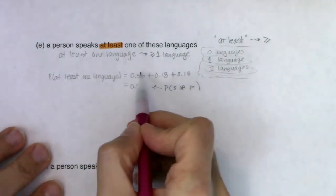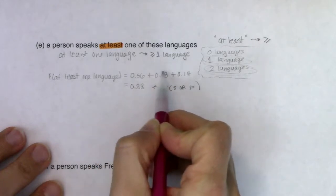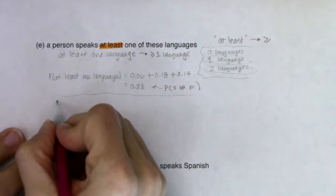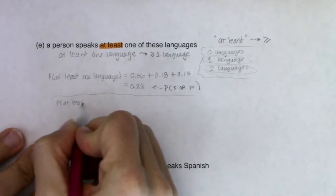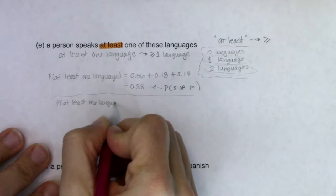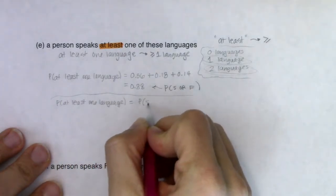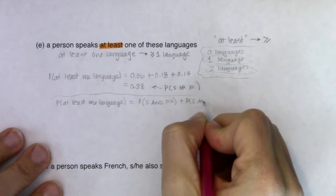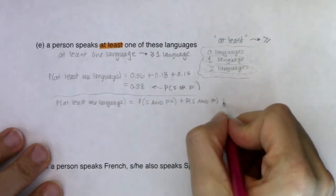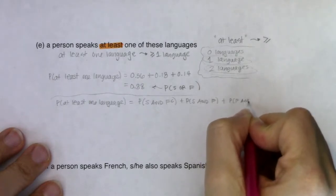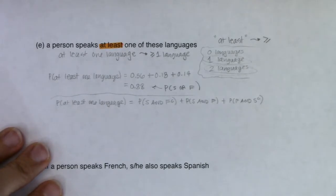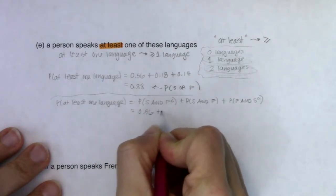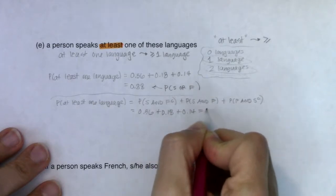If you wanted to use set notation: these were the people that spoke just Spanish, these were the people that spoke both, and these were the people that spoke just French. So I could write probability of at least one language — if just Spanish, we'd say Spanish and not French; if both, we'd say Spanish and French. Whether you use set notation or not, that's where I'm getting the 56 plus 18 plus 14, which again gets me to 88.